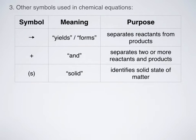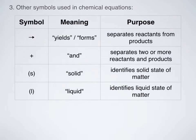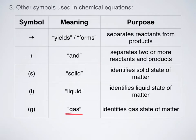The next symbols are our state symbols. A parenthesis S means that the substance is a solid — it identifies a solid state of matter. For example, Al(s) means solid aluminum. A parenthesis L represents a liquid, so Al(l) would mean liquid aluminum. And G means gas, identifying a gaseous state of matter — for example, He(g) means helium gas.